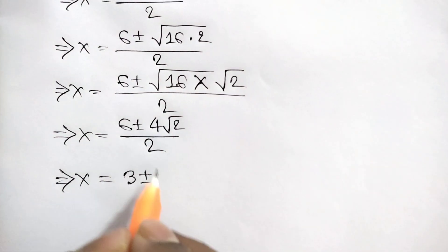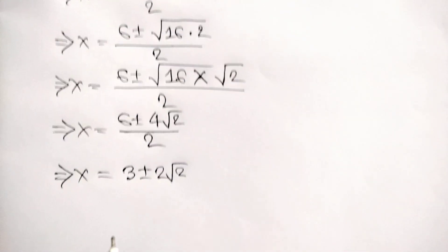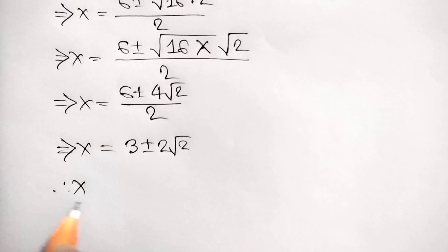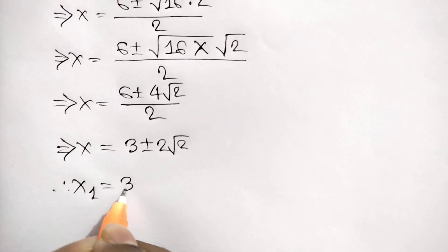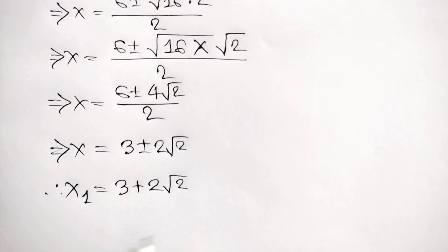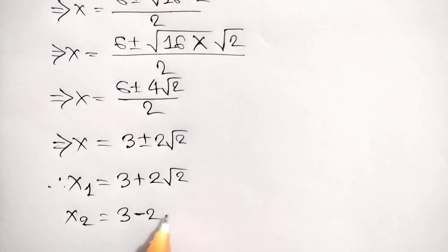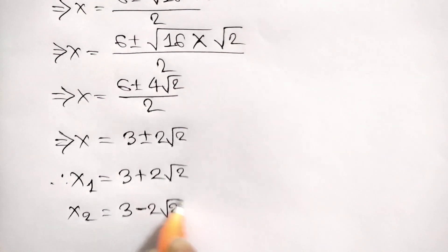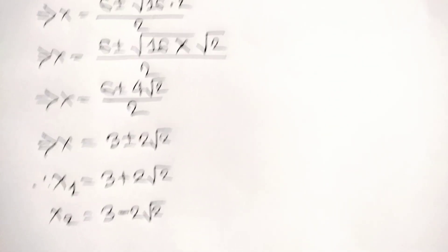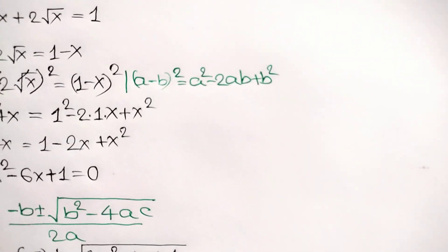Dividing through, 6 divided by 2 is 3 and 4 divided by 2 is 2, so there are two values of x: x1 is equal to 3 plus 2 square root of 2, and x2 is equal to 3 minus 2 square root of 2. Now let's check our answers using the original question, which is square root of x plus 2 square root of x is equal to 1.